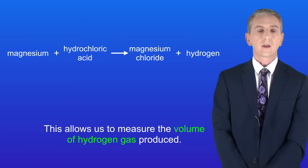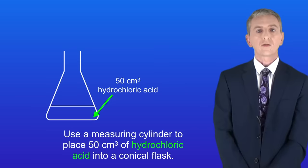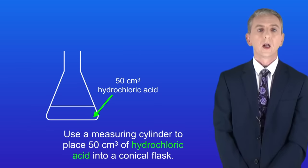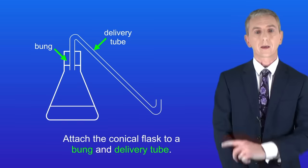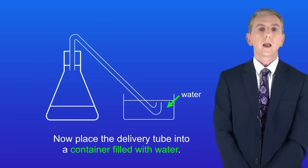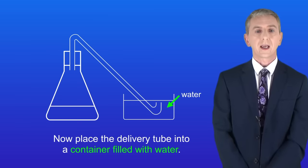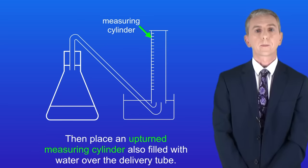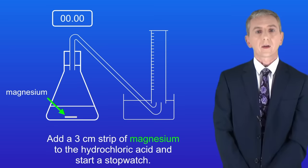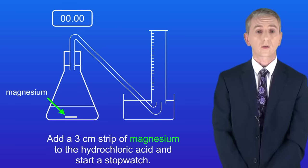Let's look at the method. First we use a measuring cylinder to place 50 centimeters cubed of hydrochloric acid into a conical flask. We then attach the conical flask to a bung and the delivery tube. Now we place the delivery tube into a container filled with water. We then place an upturned measuring cylinder also filled with water over the delivery tube. We then add a three centimeter strip of magnesium to the hydrochloric acid and we start a stopwatch.